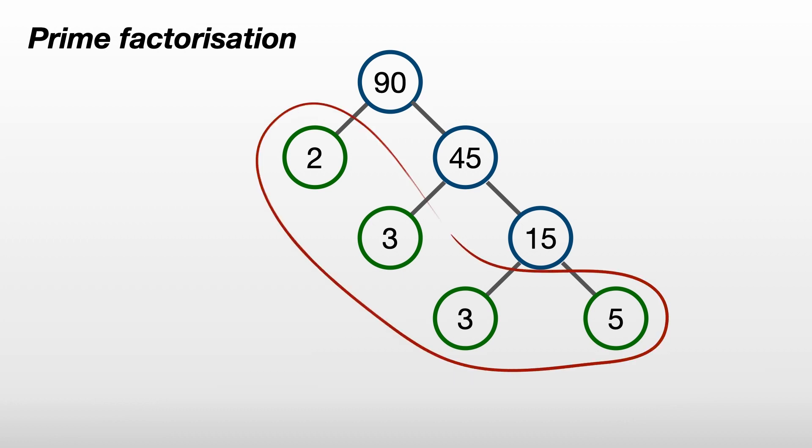As you can see, we've pulled out the prime factors of 90: 2, 3, 3, and 5.